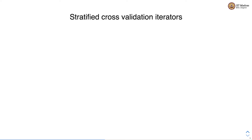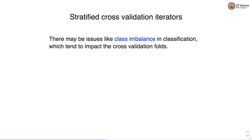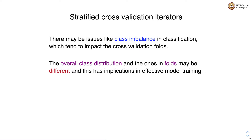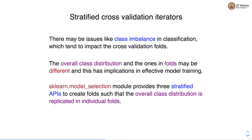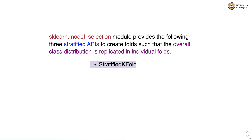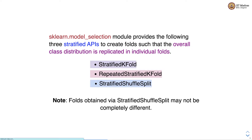Let's first study stratified cross-validation iterators. There may be issues like class imbalance in classification which tend to impact the cross-validation folds. The overall class distribution and the ones in the folds may be different, and this has implications in effective model training. sklearn.model_selection provides three stratified APIs to create folds such that the overall class distribution is replicated in individual folds: StratifiedKFold, RepeatedStratifiedKFold, and StratifiedShuffleSplit. The folds from StratifiedShuffleSplit may not be completely different, so StratifiedKFold and RepeatedStratifiedKFold are roughly equivalent to KFold, while StratifiedShuffleSplit is equivalent to ShuffleSplit without stratification.